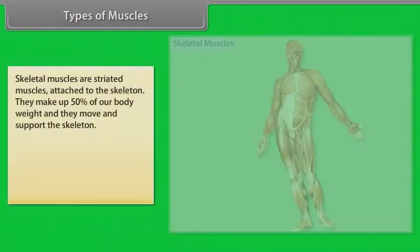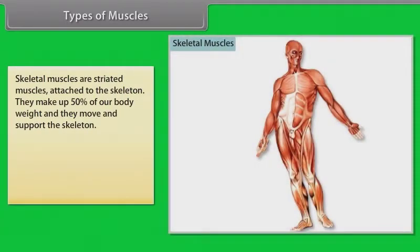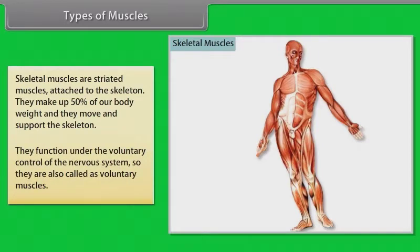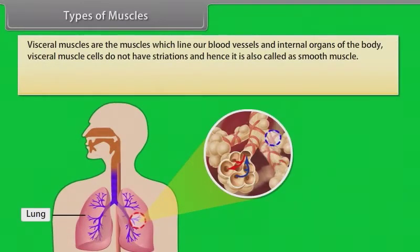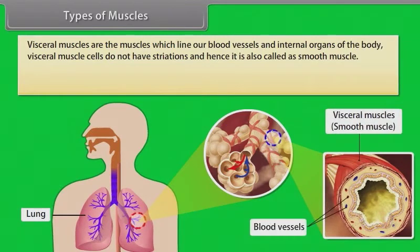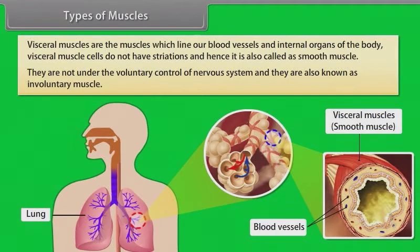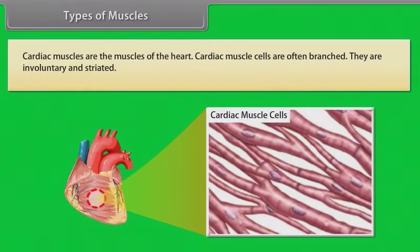Skeletal muscles are striated muscles attached to the skeleton. They make up 50% of our body weight and move and support the skeleton. They function under voluntary control and are also called voluntary muscles. Visceral muscles line our blood vessels and internal organs, lack striations, and are called smooth or involuntary muscles. Cardiac muscles are the muscles of the heart — they are involuntary and striated, and their cells are often branched.